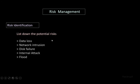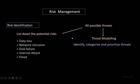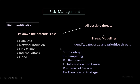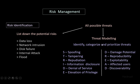In risk identification, we identify potential risks such as data loss, network intrusion, disk failure, internal attack, and flood. This process uses threat modeling, in which we identify, categorize, and prioritize threats. We can identify threats using the STRIDE model, which covers spoofing IP and MAC addresses, tampering with intercepted data, repudiation by denying an act, disclosing critical information, performing denial-of-service attacks, and elevating privileges to admin or root access. We can categorize and prioritize threats using the DREAD model, which rates threats based on damage caused, reproducibility, exploitability, number of affected users, and discoverability.